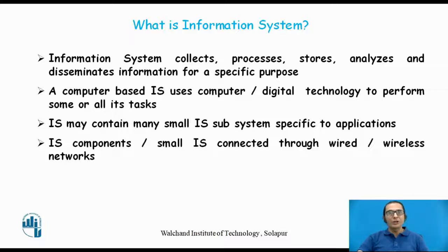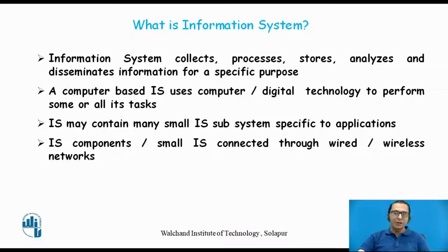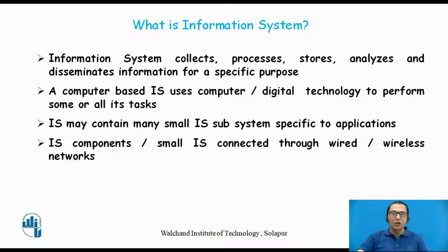The information system basically collects, processes, stores, analyzes and disseminates information for a specific purpose. The purpose is important — for example, a saving bank account is a specific purpose. When we talk about an information system, we are talking about a computer-based information system that uses digital technology: laptops, computers, smartphones, and all communication media. It is called a computer-based or digital information system.